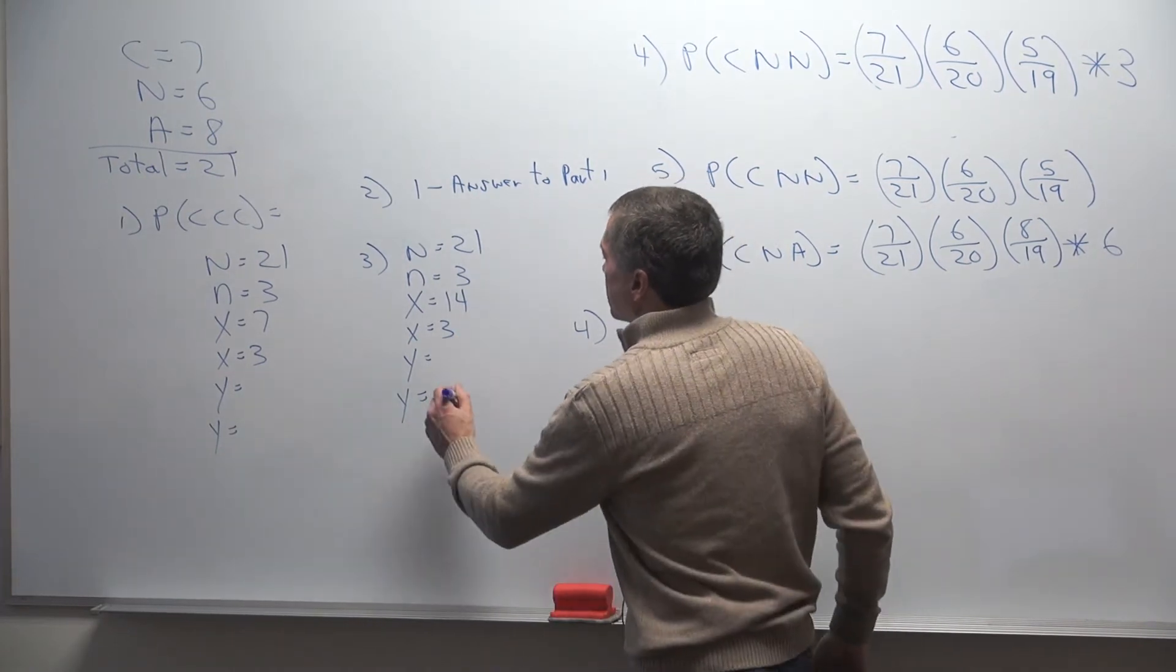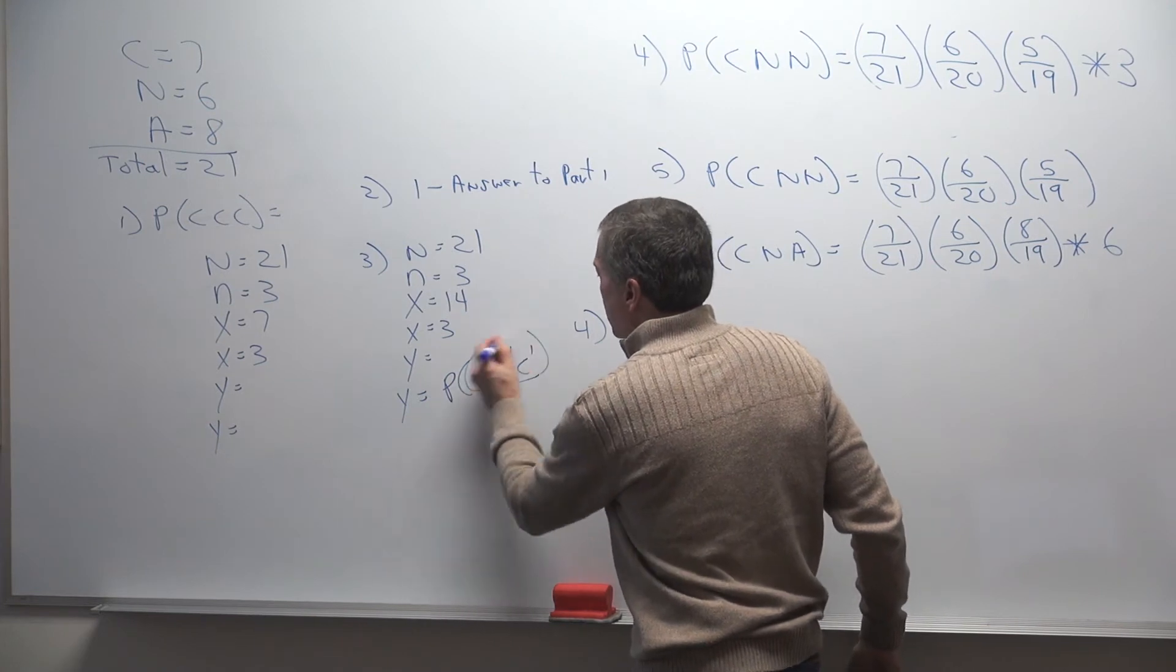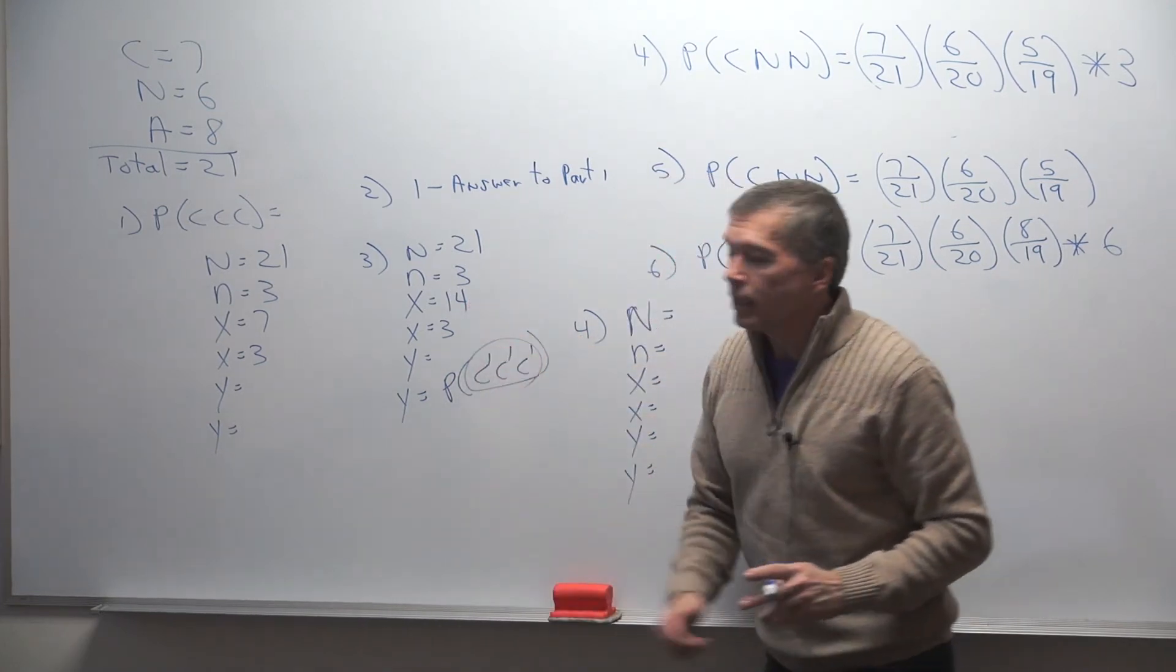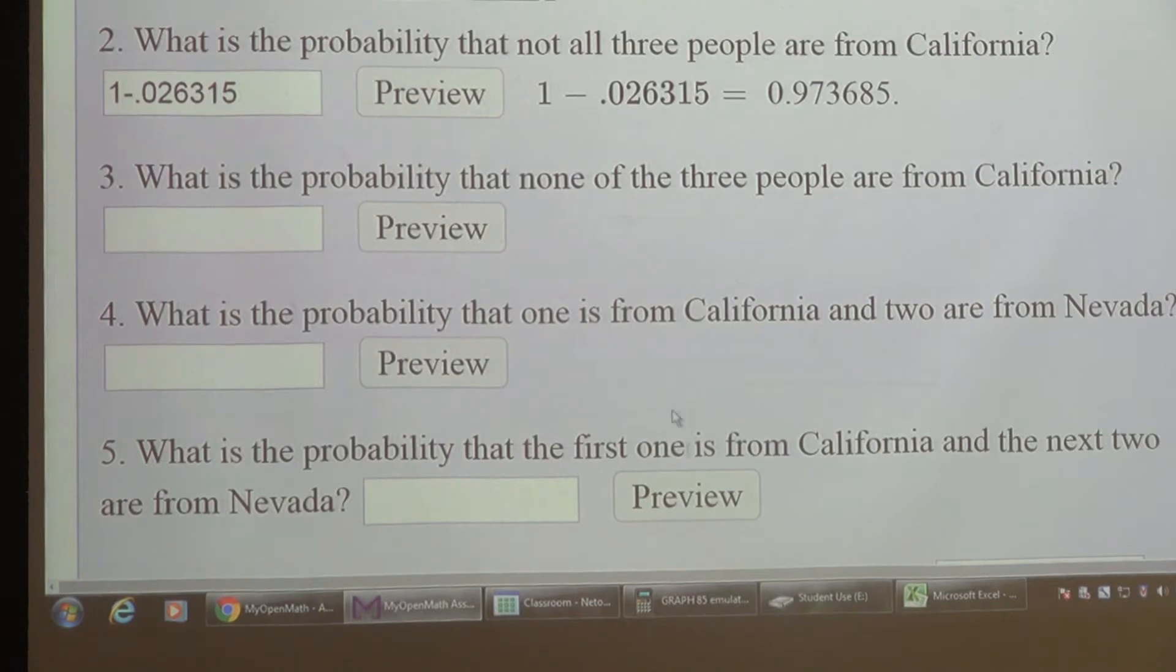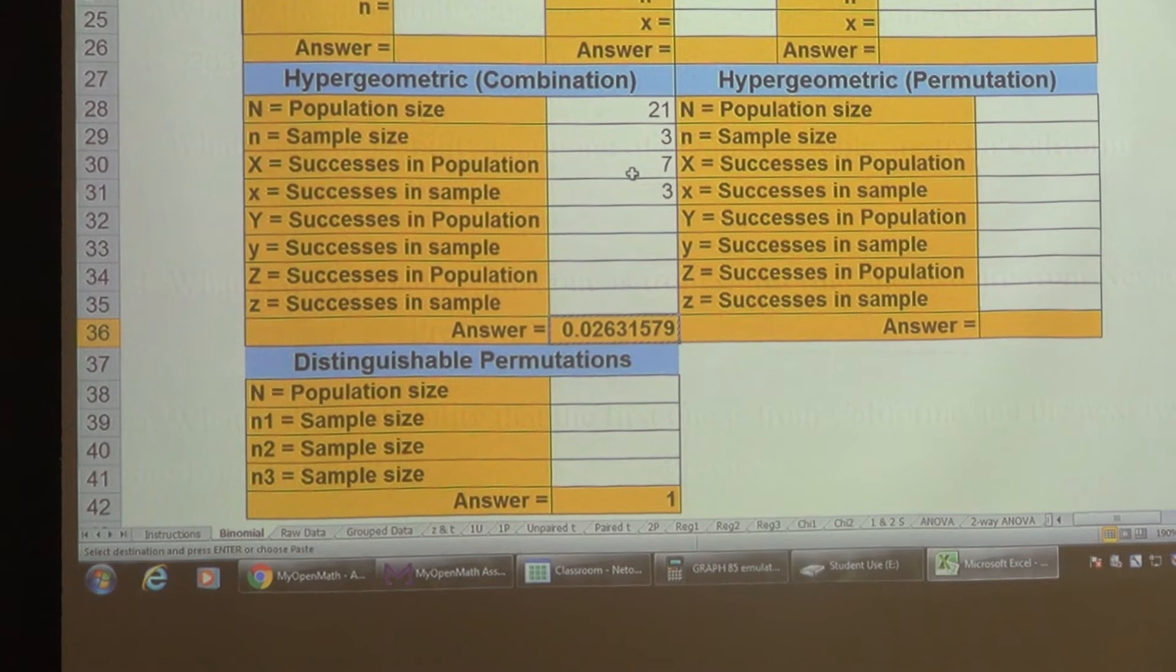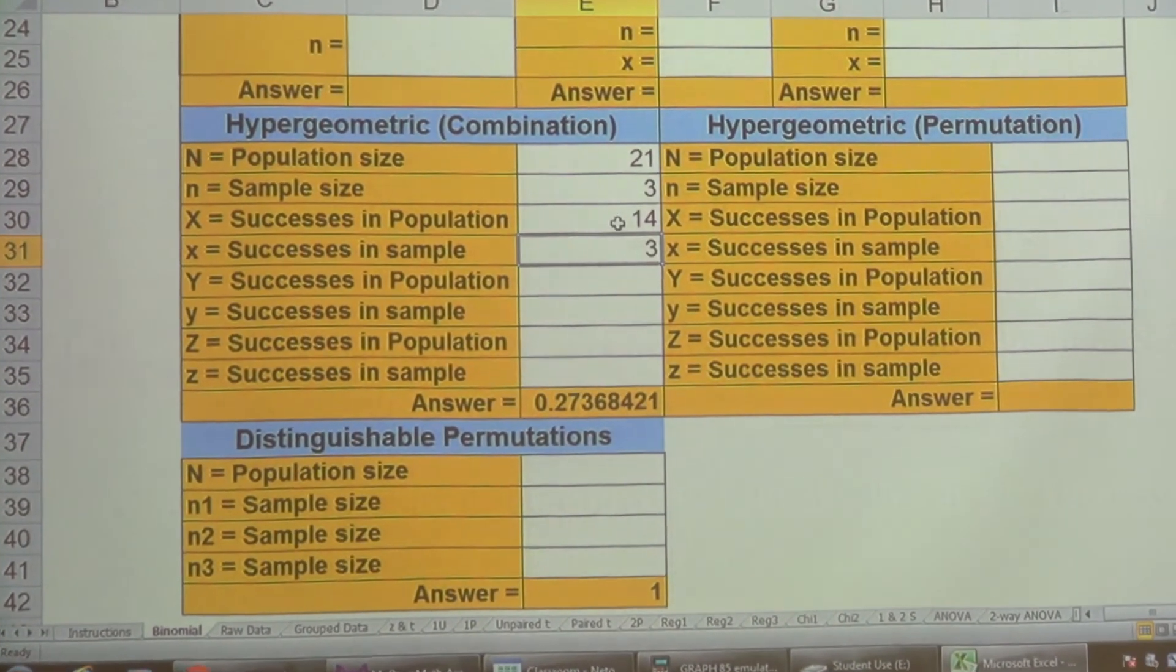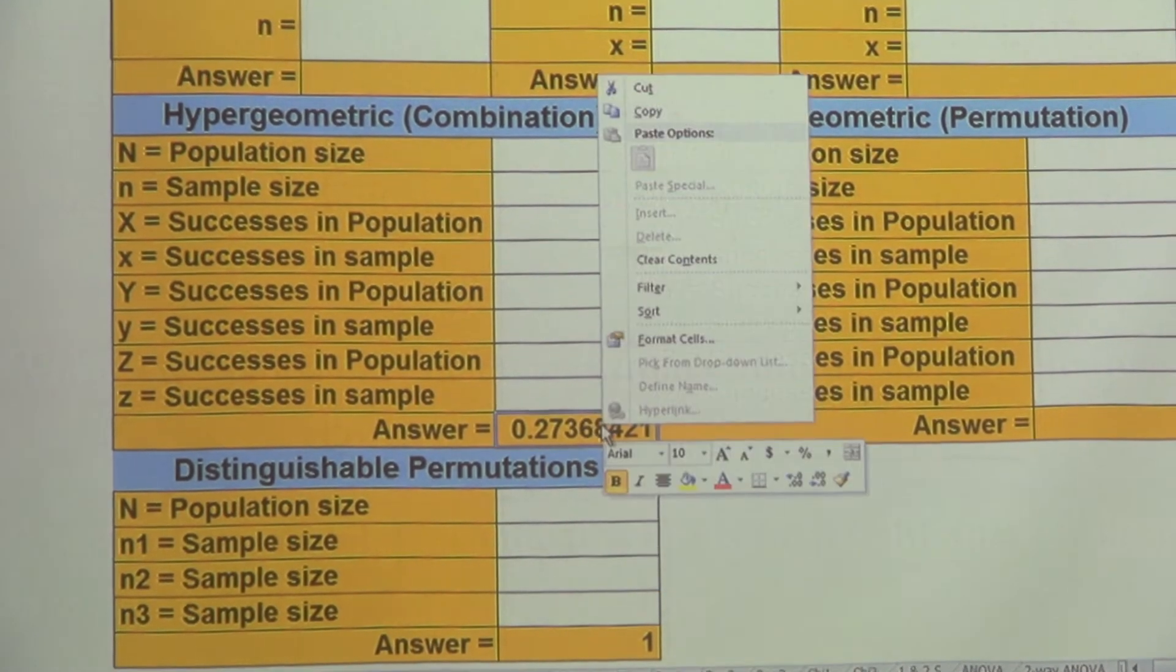There's 14 that are not from California, and I need three of them to be not from California. Right here what I'm looking for is the probability of not California, not California, not California. That's three from the not California. So I'll type those in. This stays the way it is. This right here will be 14 and 3. And there's your 0.2736.